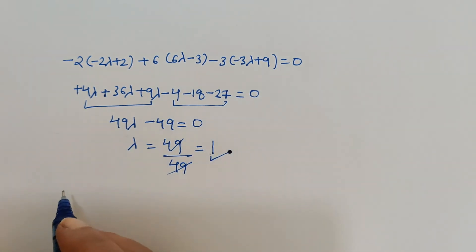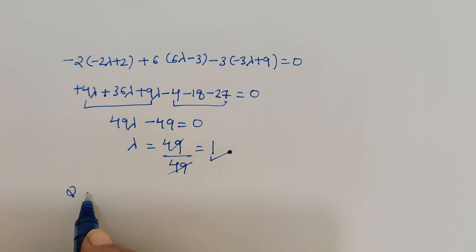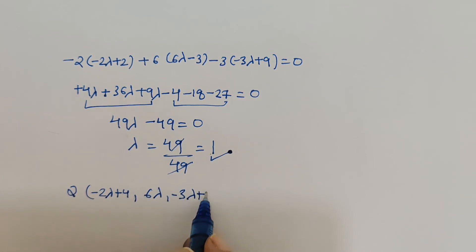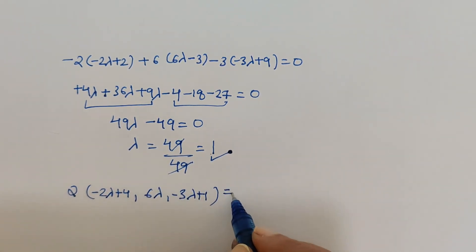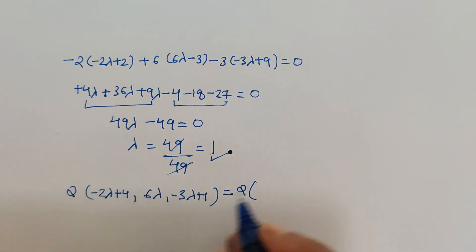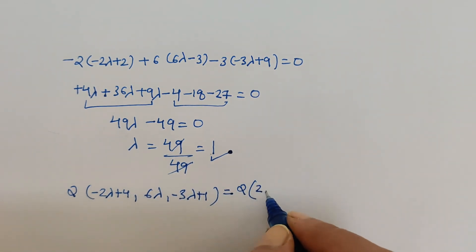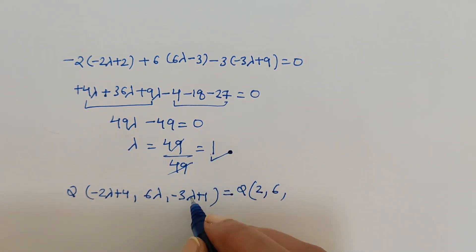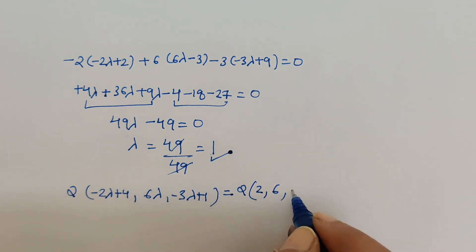Now substituting λ = 1 into the coordinates of the foot of the perpendicular Q: x = -2(1) + 4 = 2, y = 6(1) = 6, z = -3(1) + 1 = -2. So the foot of the perpendicular is Q = (2, 6, -2).